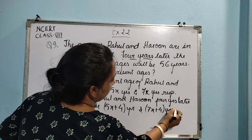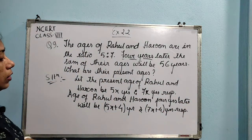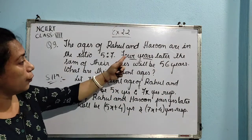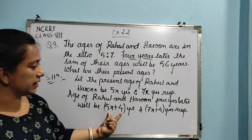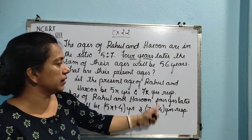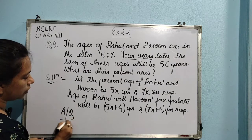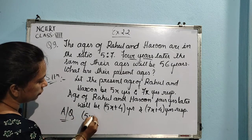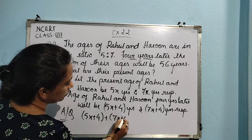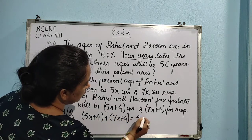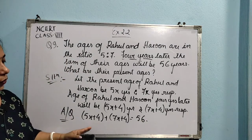Now, four years later the sum of their ages is going to be 56. This is the age of Rahul and this is the age of Haroon. To construct the equation: 5x plus 4 plus 7x plus 4 is going to give us 56.